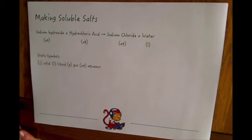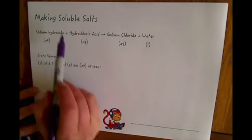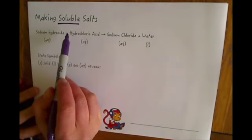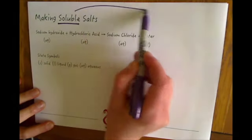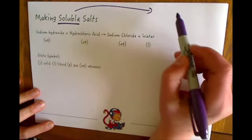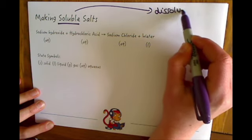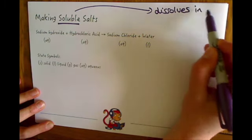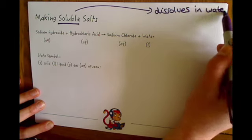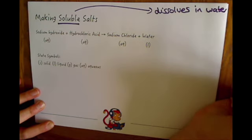Hello and welcome to this video about making soluble salts. In previous videos we've looked at how we make salts and how we name salts, and this video introduces the word soluble, which is really important when you're talking about salts. All soluble means is that it dissolves in water to make a solution, so a soluble salt will be one that dissolves in water.